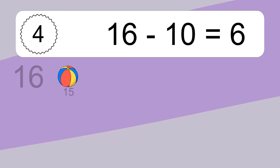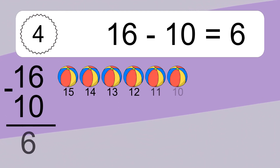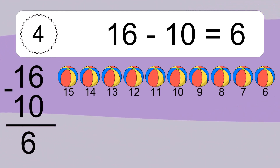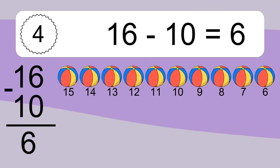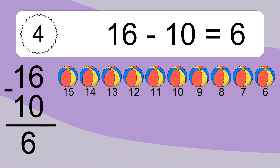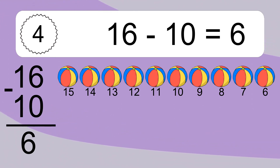16 minus 10 equals what? 16 minus 10 equals 6. Let's count it: 15, 14, 13, 12, 11, 10, 9, 8, 7, 6.